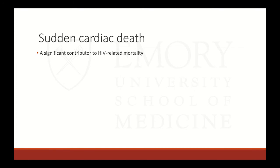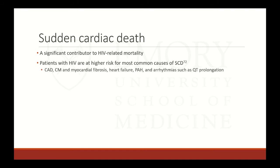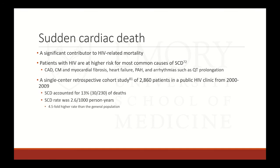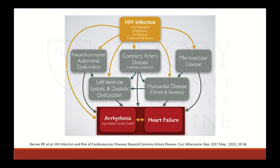Sudden cardiac death is a significant contributor to HIV-related mortality. Patients with HIV are at higher risk for most common causes, including coronary artery disease, cardiomyopathy and fibrosis, heart failure, pulmonary hypertension, and arrhythmias such as QT prolongation. A single-center retrospective cohort of almost 3,000 patients at a public HIV clinic found that sudden cardiac death accounted for 13% of patient deaths and occurred at a rate of 2.6 per 1,000 person-years — four and a half times higher than in the general population.